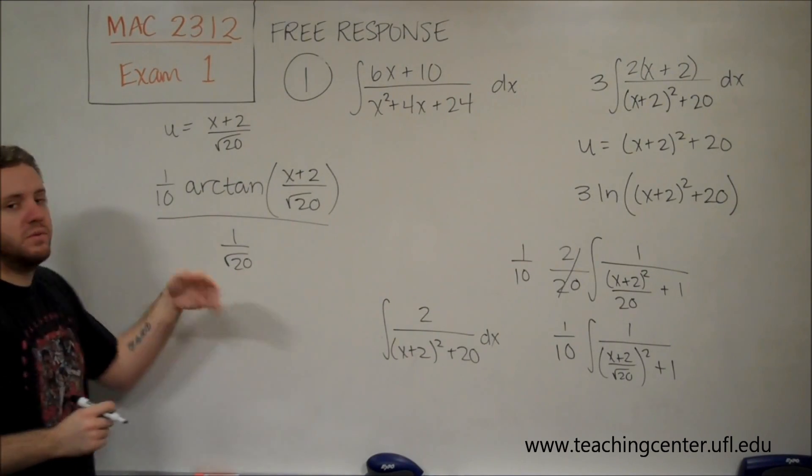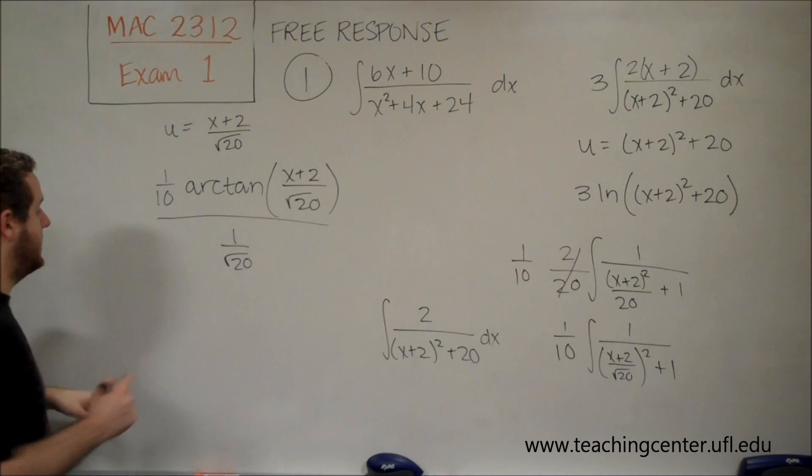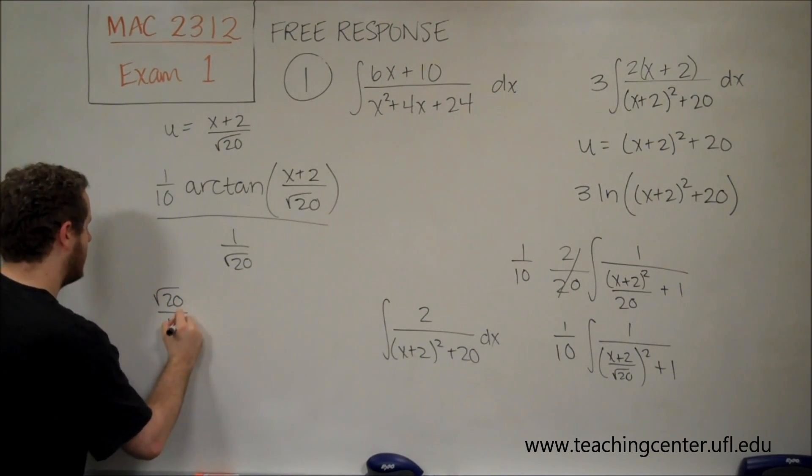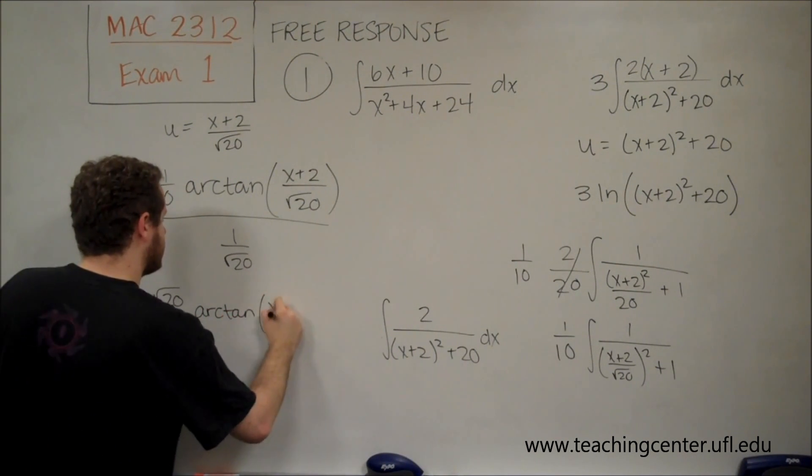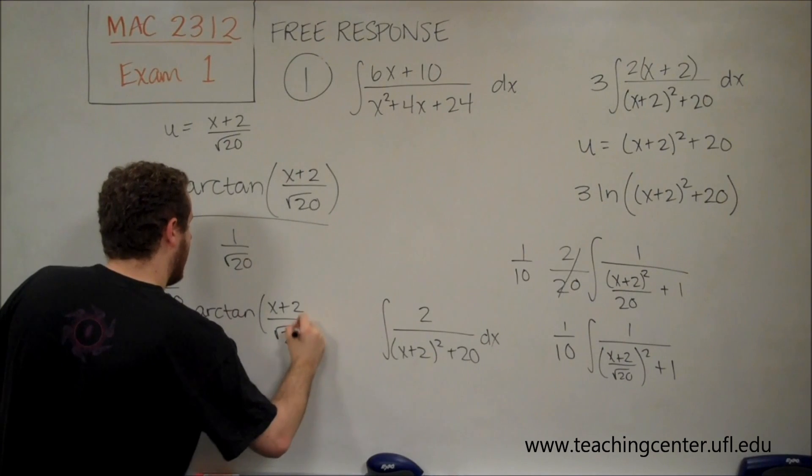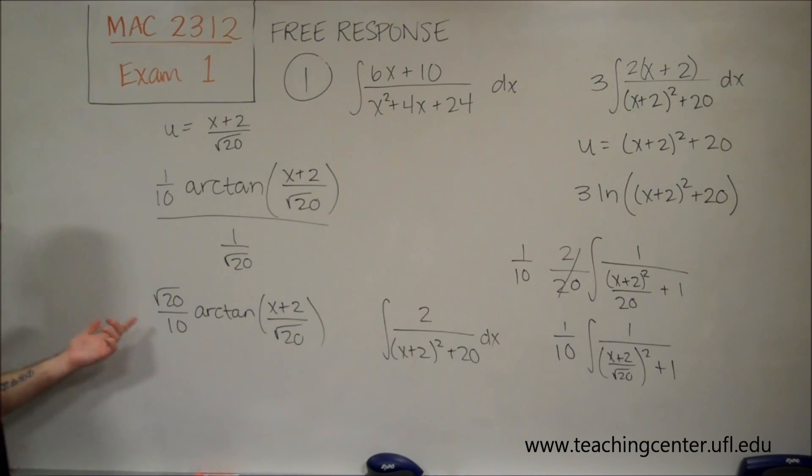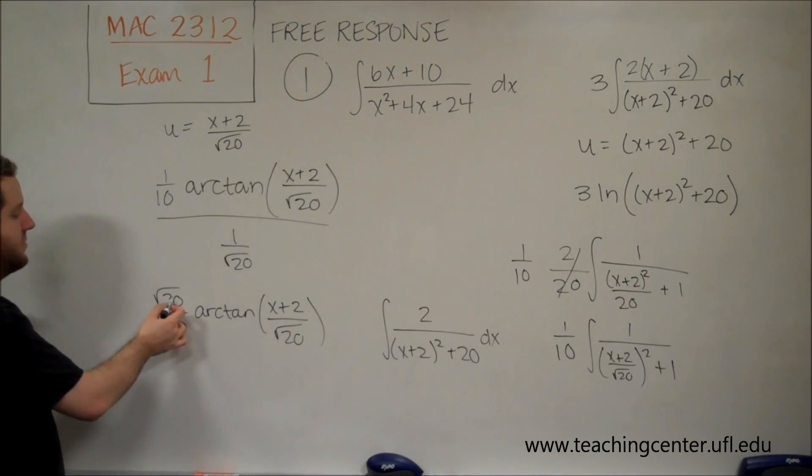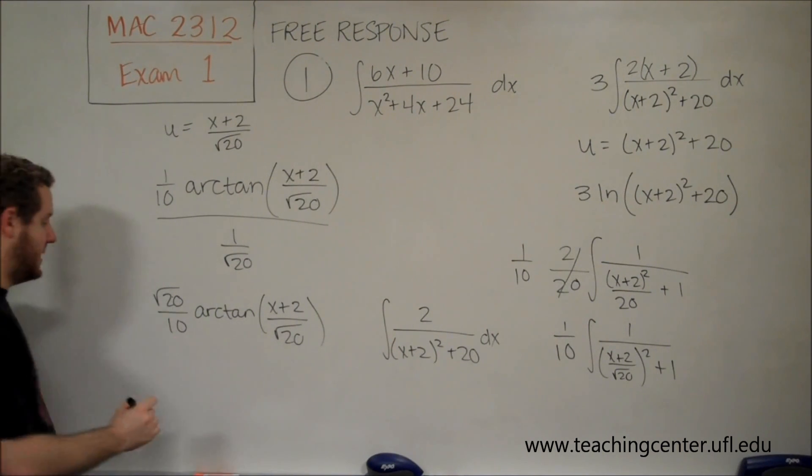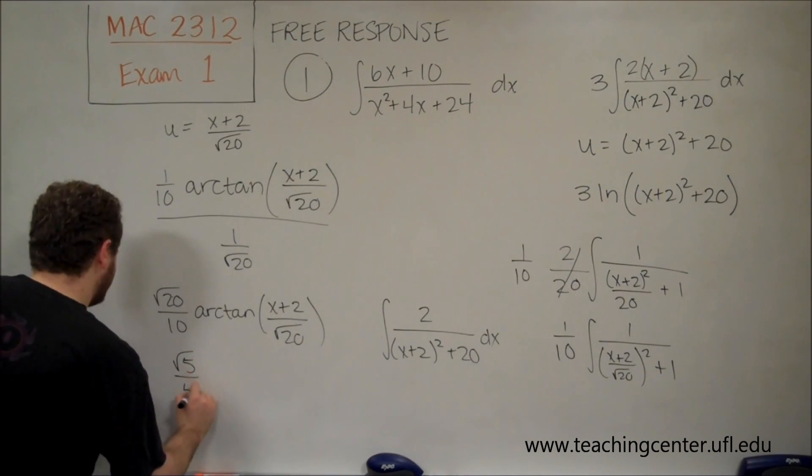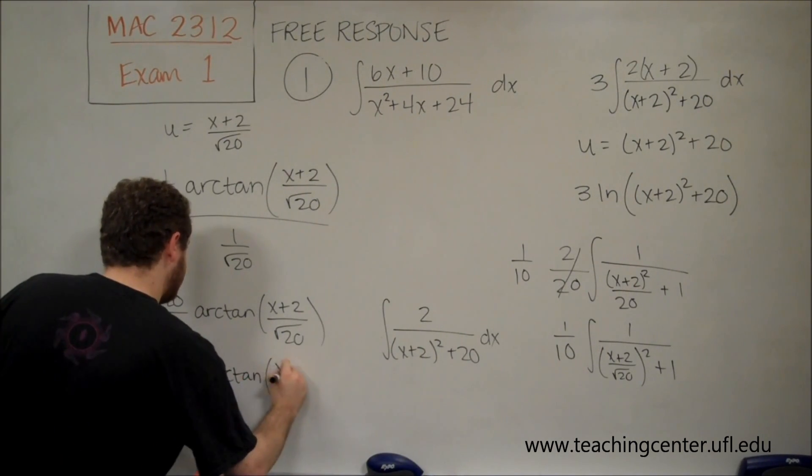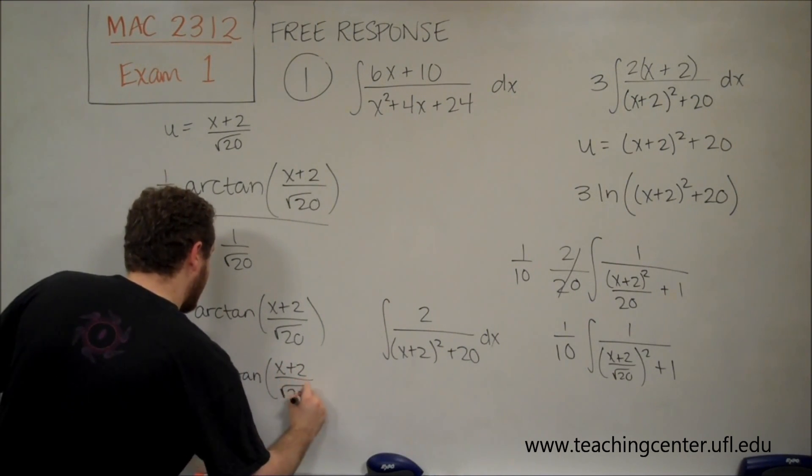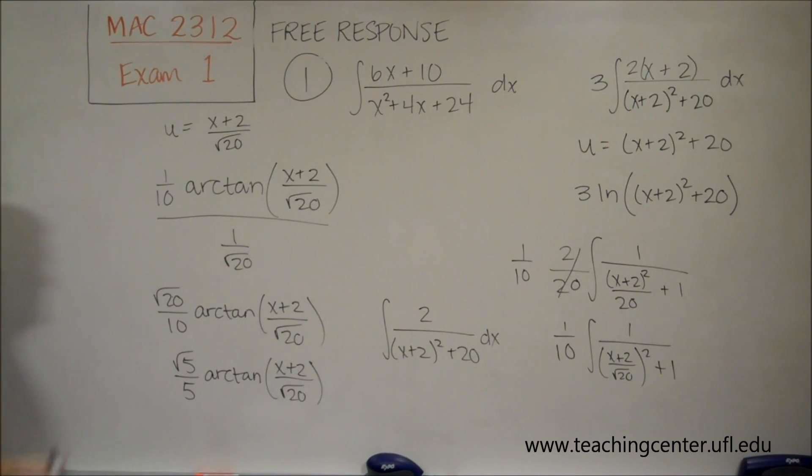To simplify that a little bit, since we're dividing by 1 over square root of 20, that's the same thing as multiplying by square root of 20. So we get square root of 20 over 10 of our arctangent. And we can do a little bit more simplification because square root of 20 can really be factored. So this is 2 square root of 5. And then we would divide by 10. So those would cancel out 2. So really we get square root of 5 over 5.